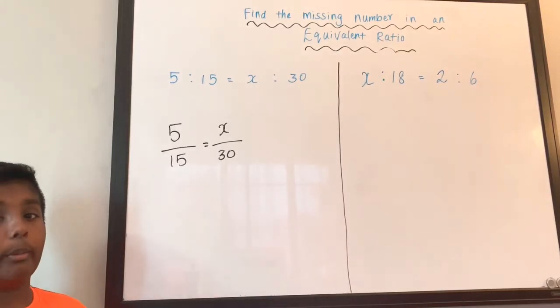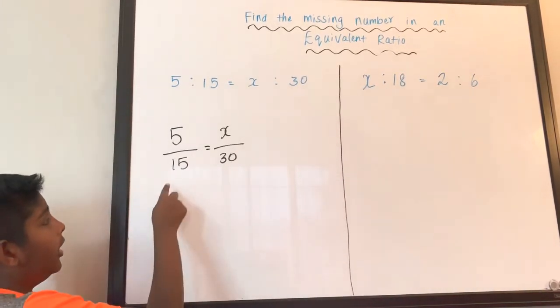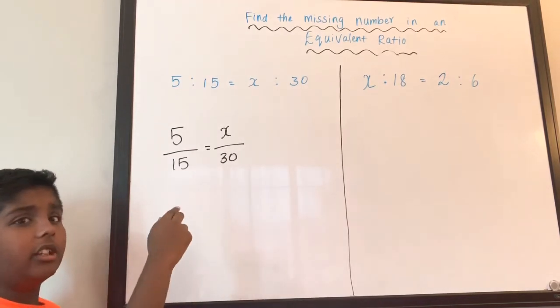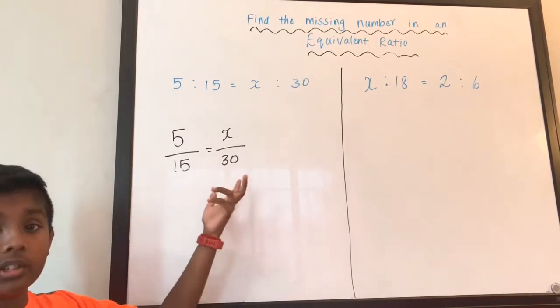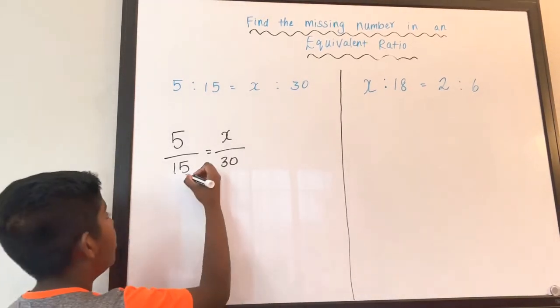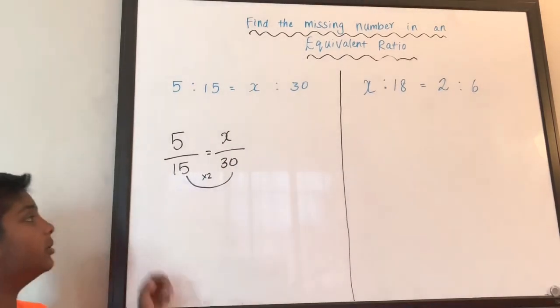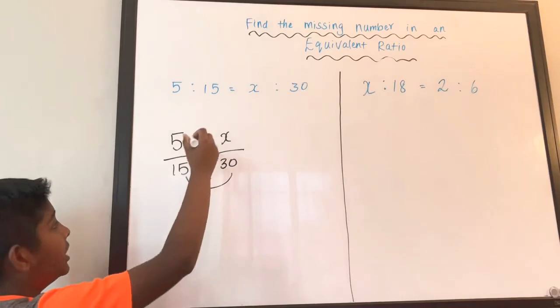We always have to remember that order is important. So 15 then turns into 30. So 15 times 2. So 15 times 2 equals 30. So whatever we do to one side, we have to do the other side. So we have to do the same thing.